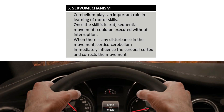Servo mechanism: the cerebellum plays an important role in the learning of motor skills. Once a skill is learned, sequential movements can be executed without interruption. But when there is any disturbance in movement, the corticocerebellum immediately influences the cerebral cortex to correct the movement. This action of the corticocerebellum is known as the servo mechanism.